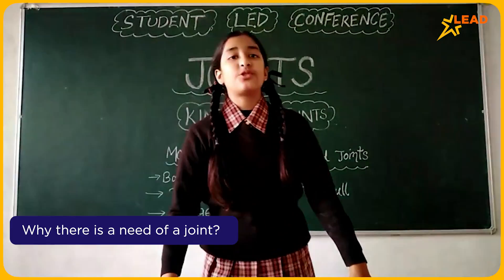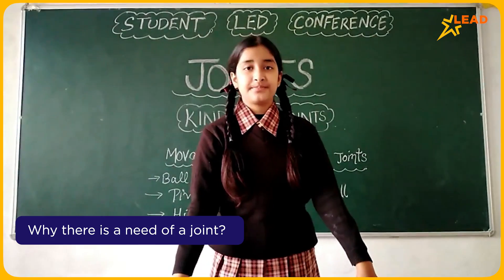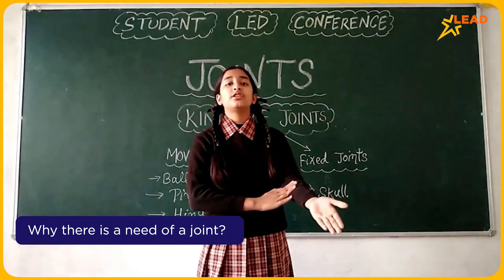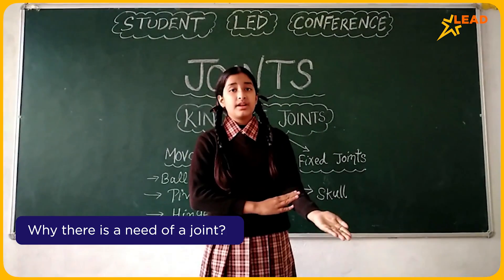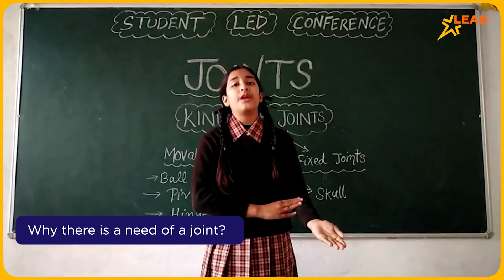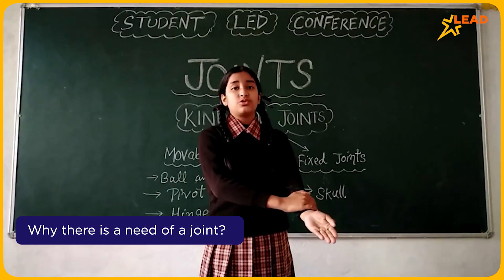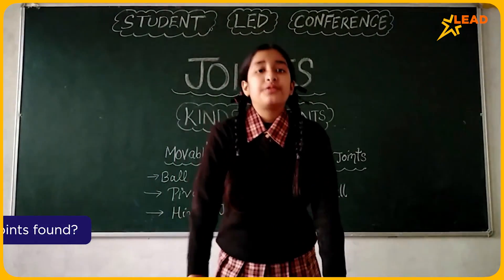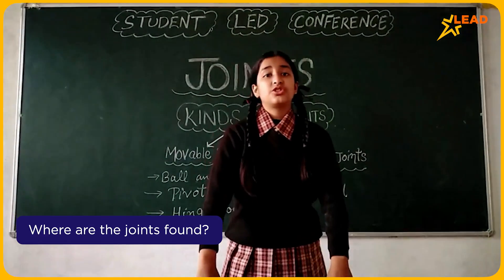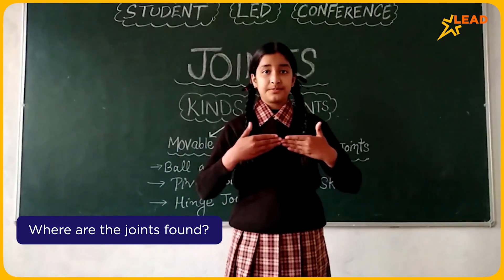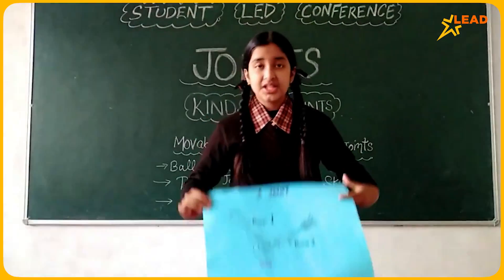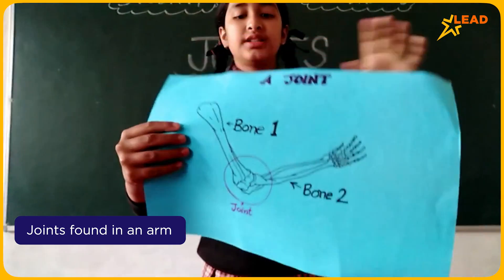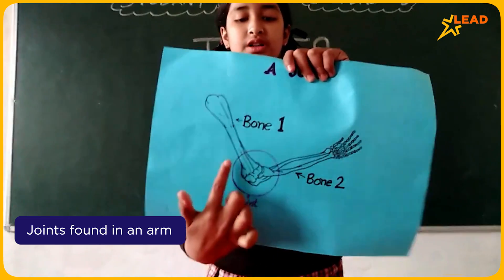My question is: why is there a need for a joint? I will tell you. First, we will observe our arms. Our arm is made up of more than one bone. These bones are connected to each other due to joints. So where are the joints found? Joints are found between two bones — see, between bone 1 and bone 2, there is a joint.